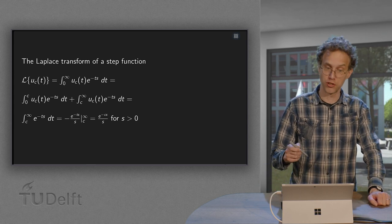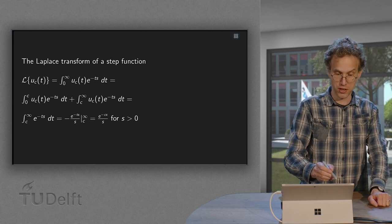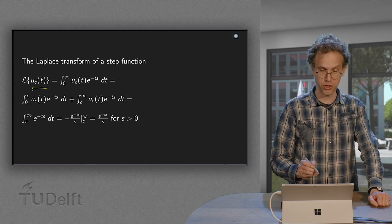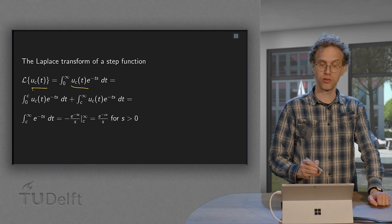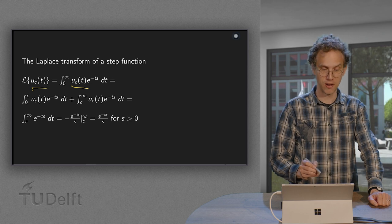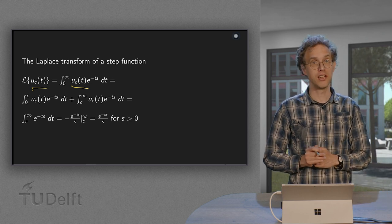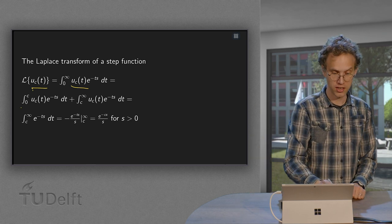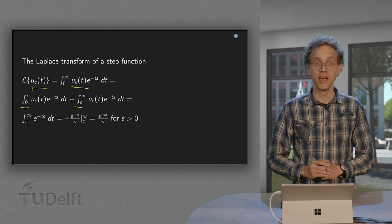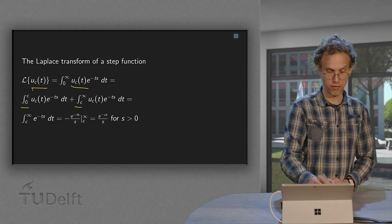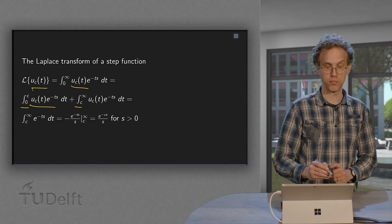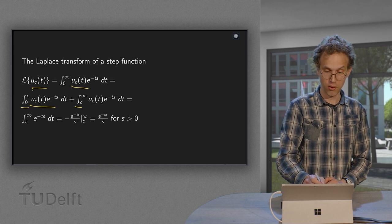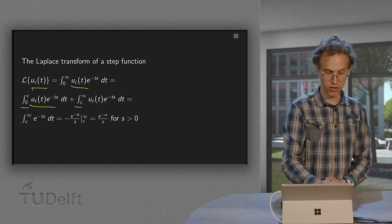So how does this work? We take the Laplace transform of a step function u_c first. Plugging in u_c at the usual place, we can split up the integral into parts from 0 to c and from c to infinity. On the first part, the step function is 0, so that part drops out. We are left only with the second term.